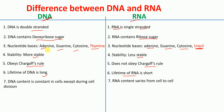The DNA content is generally constant in cells except during cell division, whereas RNA content actually varies from cell to cell.